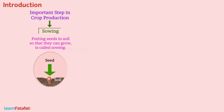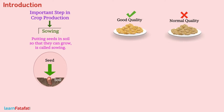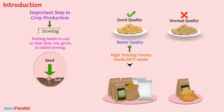For sowing, farmers select good quality seeds. These are the clean and healthy seeds of good variety. High yielding variety seeds, i.e. HYV seeds, are of better quality than normal quality seeds and give higher yield and higher agricultural produce.